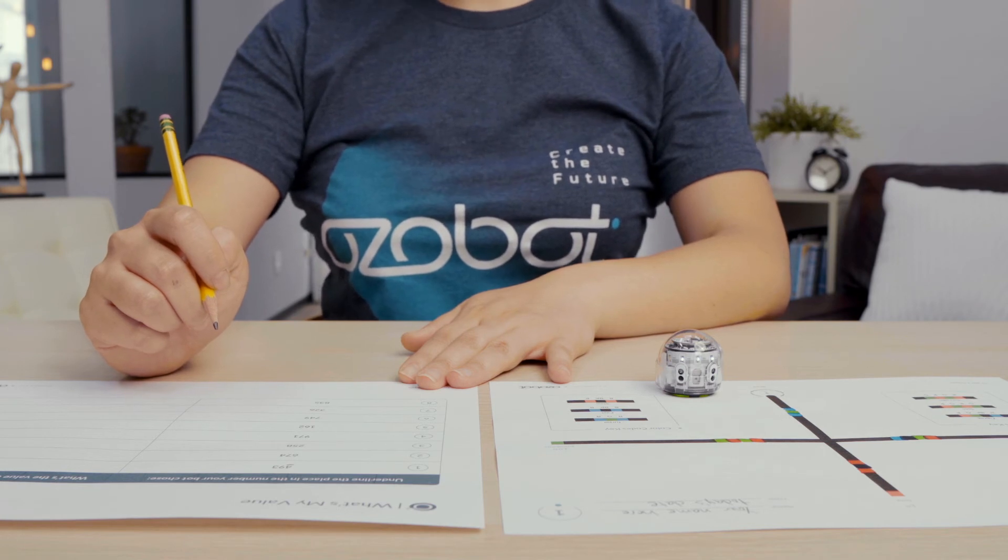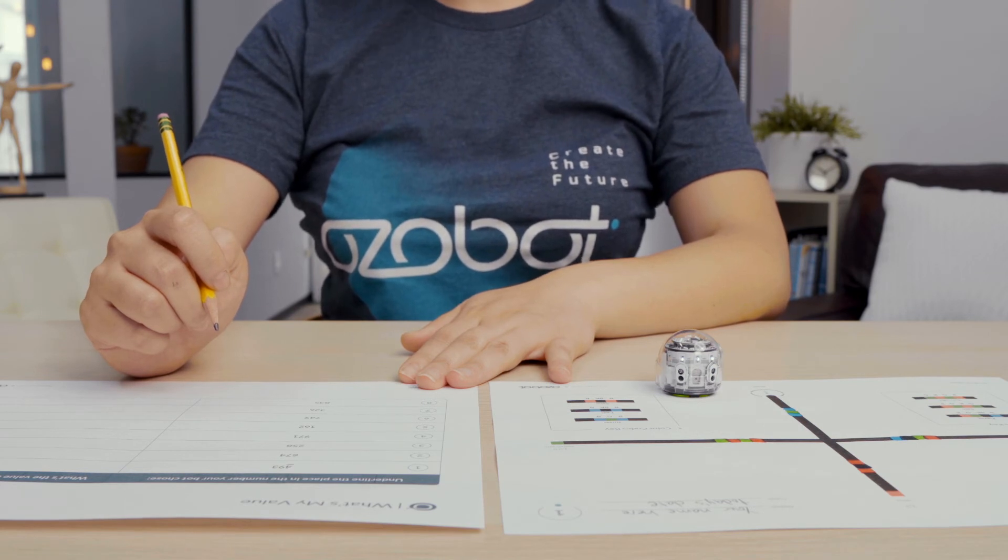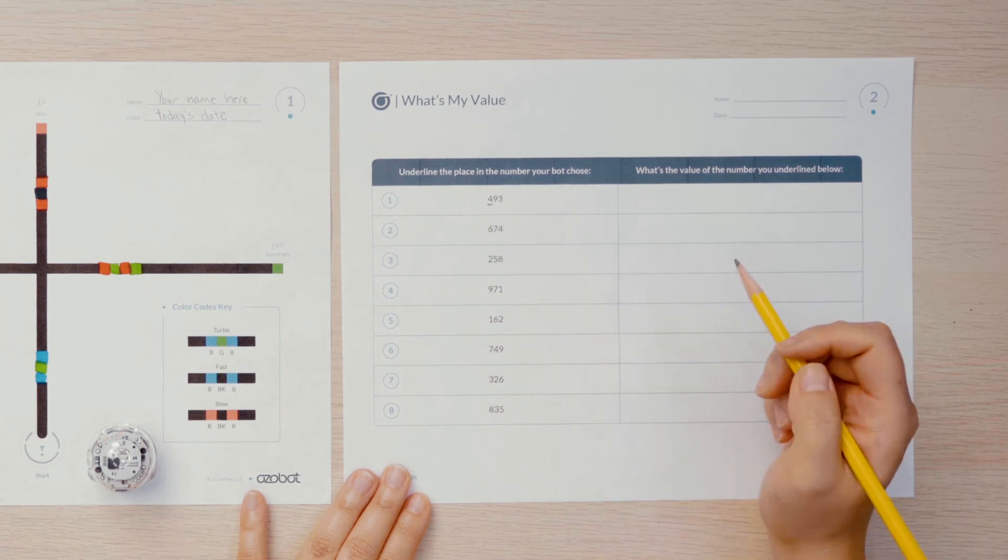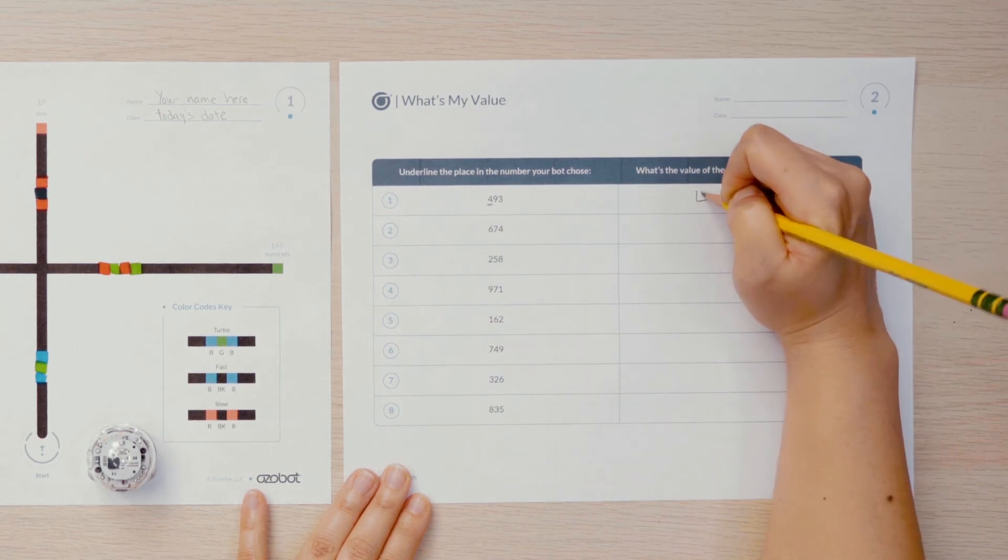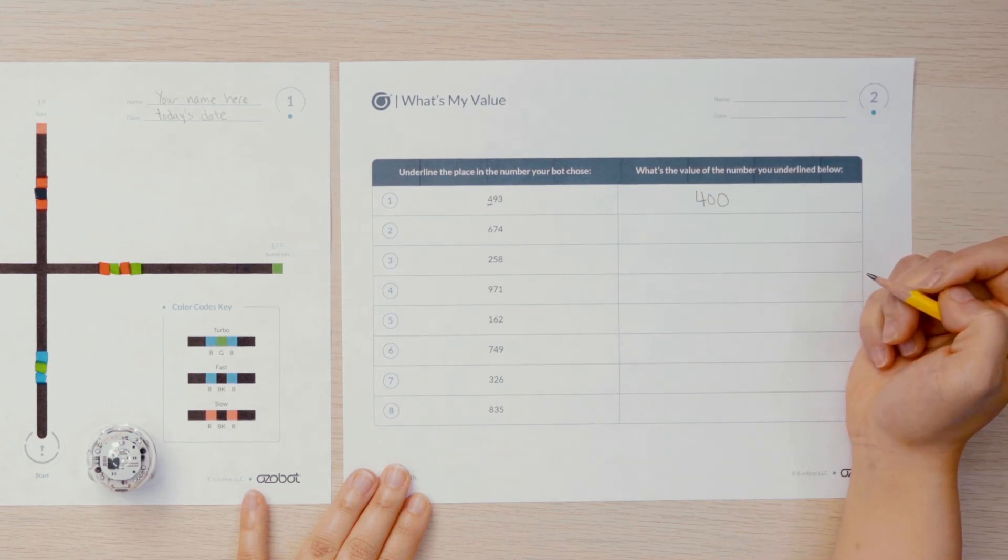Now that you have found the place in a three digit number, you are going to write to show its value. My bot chose the hundreds place, so I underlined the 4 in the number 493. Since 4 is in the hundreds place, its value is 400. I will write this in the column next to the number 493.